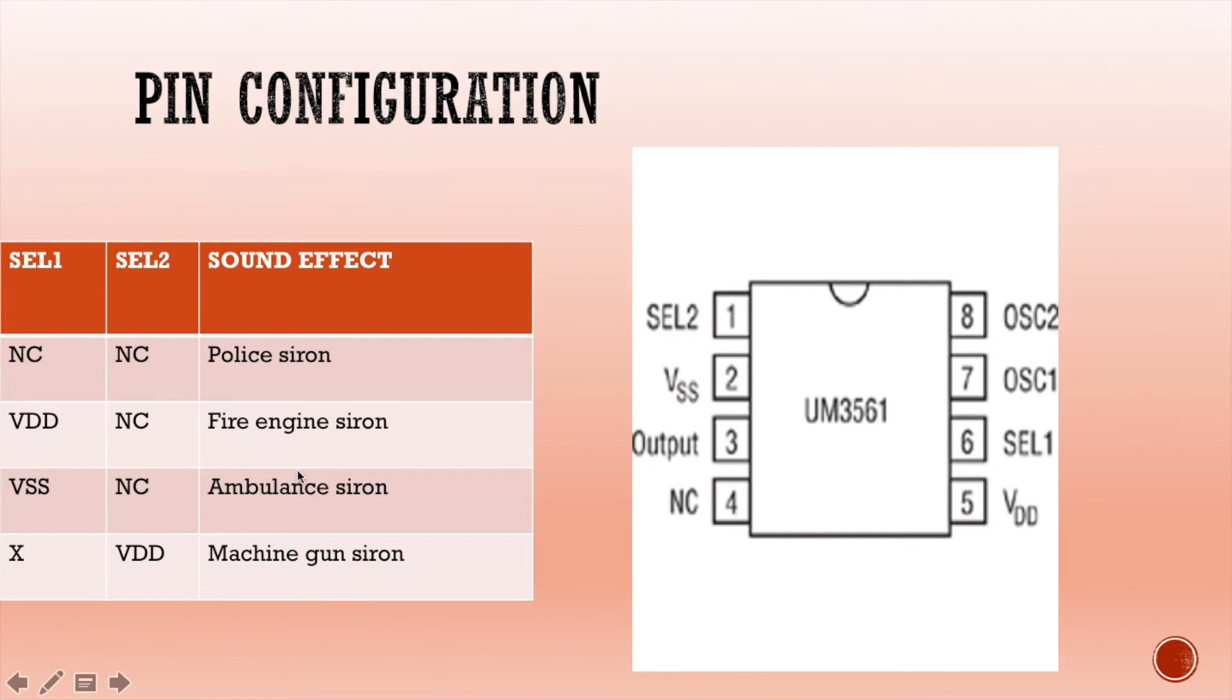If you need fire engine siren, do not connect anything to SEL2 and connect pin 6 to pin 5. If you connect VSS to SEL1, which means connect pin 2 to pin 6, and no connection to pin 1, ambulance siren will be generated. If you connect SEL2 pin 1 to pin 5 and SEL1 pin 6 to either pin 2 or pin 5, then machine gun siren will be generated.